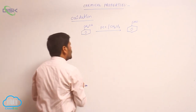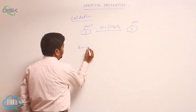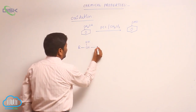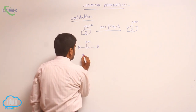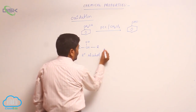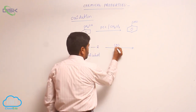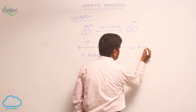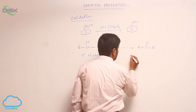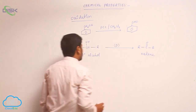If you are taking a secondary alcohol — a 2° alcohol — any 2° alcohol reacts with oxidation and it always converts into a ketone.